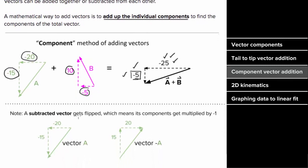And again, if you need to subtract a vector, you can still add the components, except the components of a negative vector all get multiplied by negative one. In other words, if vector a has components negative 20 and negative 15, then vector negative a would have components positive 20 and positive 15.